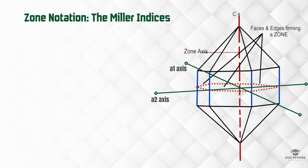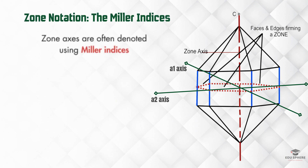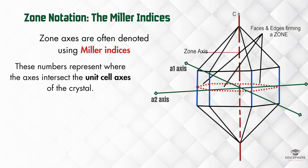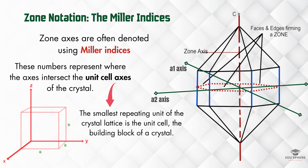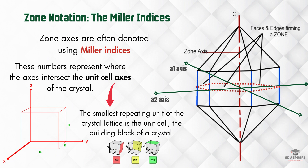Zone axes are often denoted using Miller indices — a set of numbers that represent the axis's intercepts with the crystal's unit cell axes. The unit cell is the fundamental building block of a crystal structure. Miller indices express the reciprocals of these intercepts. We will discuss Miller indices in more detail in the next video, as it's an important concept in crystallography.